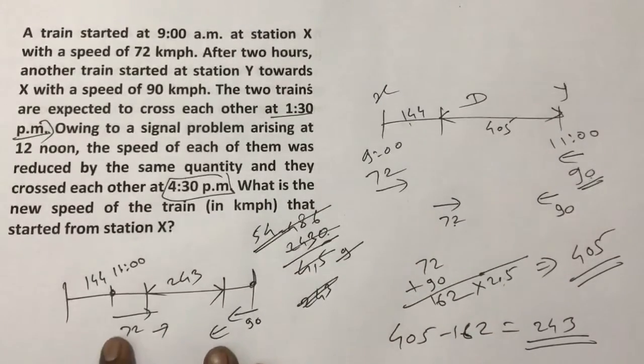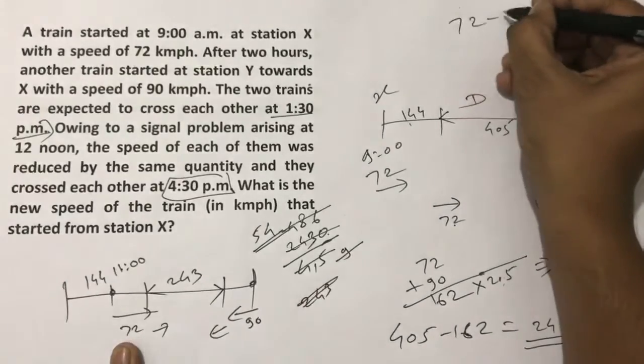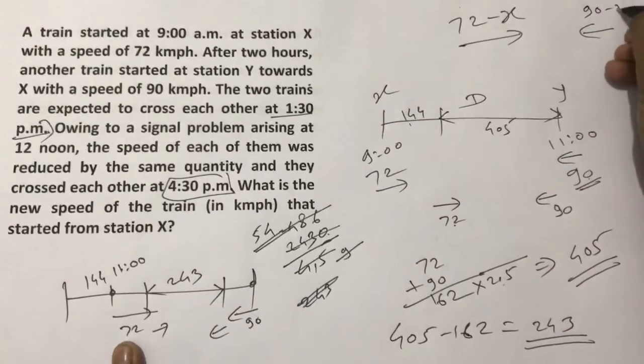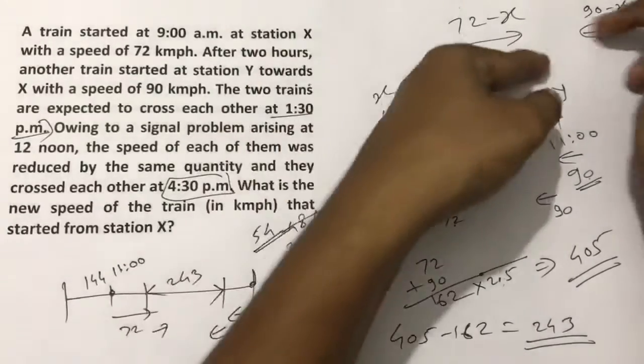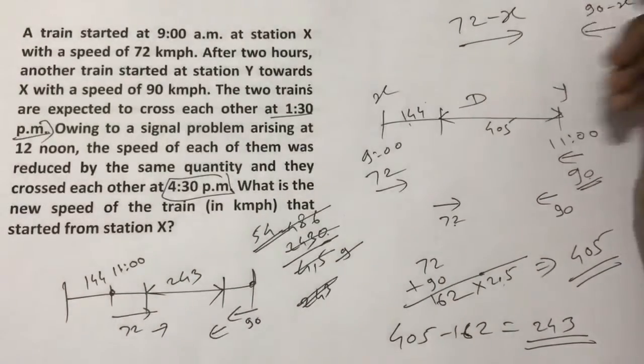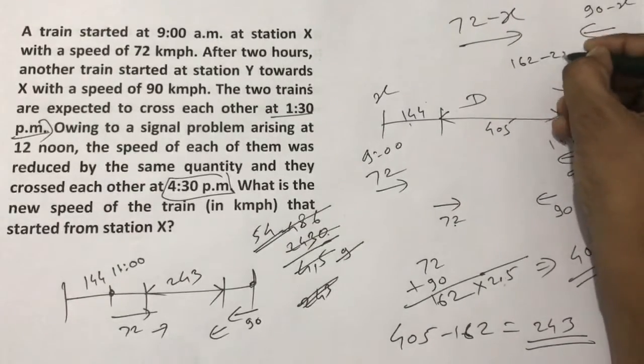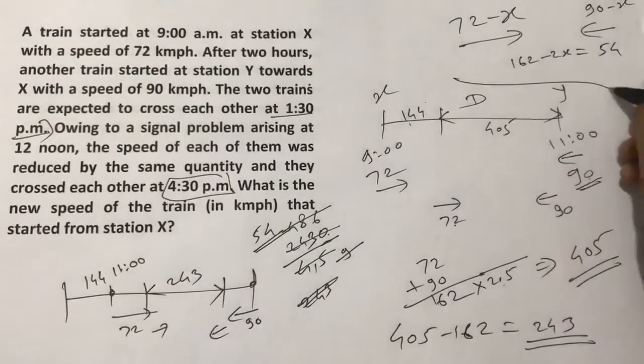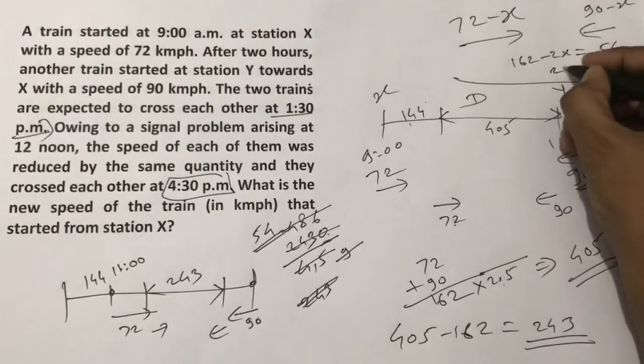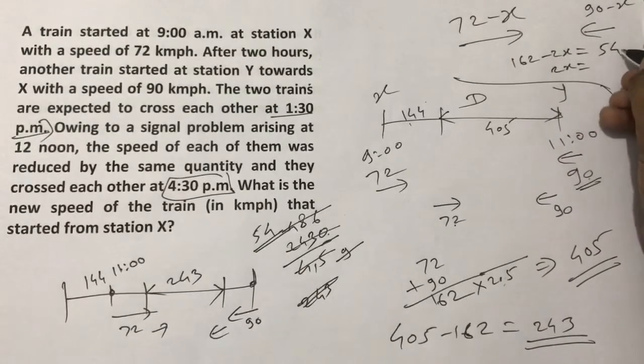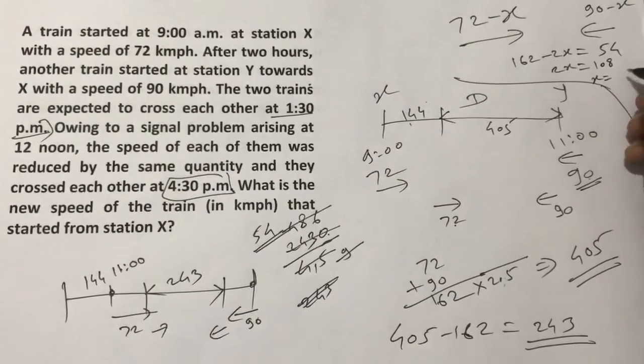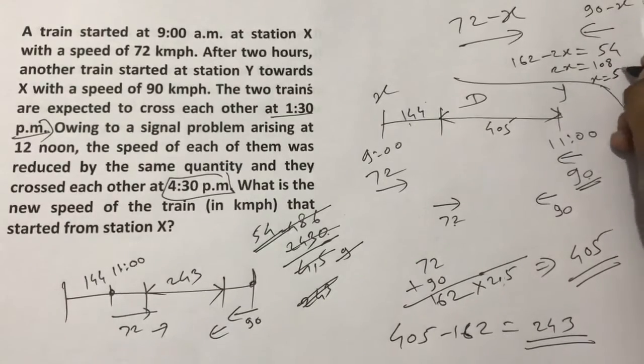The relative speed of these two has become only 54 km per hour. This was 72, reduced by x let's say, so its speed would be 72 minus x. The other one was 90, its speed became 90 minus x. So their relative speed would be 90 plus 72 is 162 minus 2x. And we know that this new relative speed is 54. So 162 minus 2x is 54. That means 2x is 162 minus 54 is 108. That means x is 54.